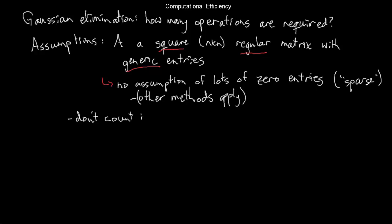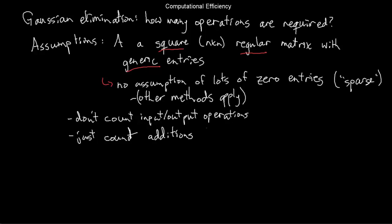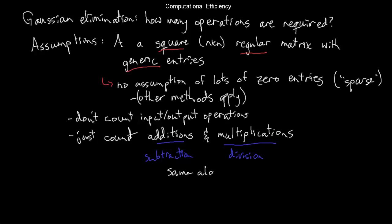I'm not going to count input and output operations to the hard drive and pulling things from memory, as this really depends on your implementation. What we're trying to get at is the complexity of the mathematics required. So all we're going to count are the number of times we add and the number of times we multiply. Subtraction is the same as addition, and division is the same as multiplication, so we're not going to worry too much about that.